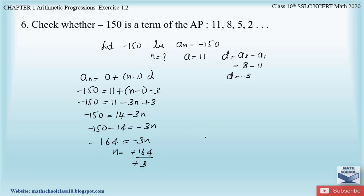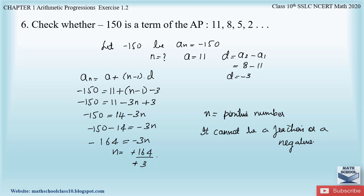Remember: n should always be a positive whole number; it cannot be a fraction or a negative number. Since we got n = 164/3, which is a fraction, we can say that therefore -150 is not a term of the AP.